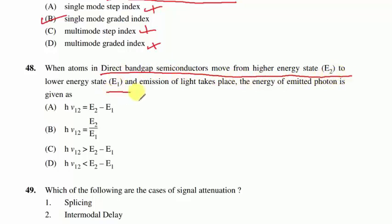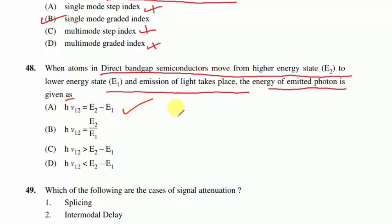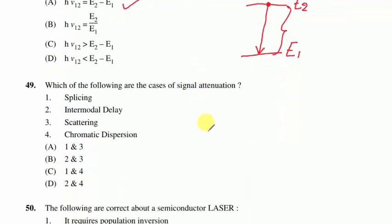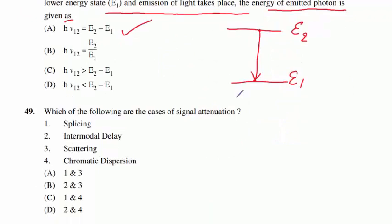Question 48: when atoms in direct bandgap semiconductors move from a higher energy level to a lower energy level and emit light, the energy of the emitted photon is hν₁₂ = E2 − E1. If the electron jumps from energy level E2 to E1, the emitted energy equals the bandgap difference. Option A is correct.